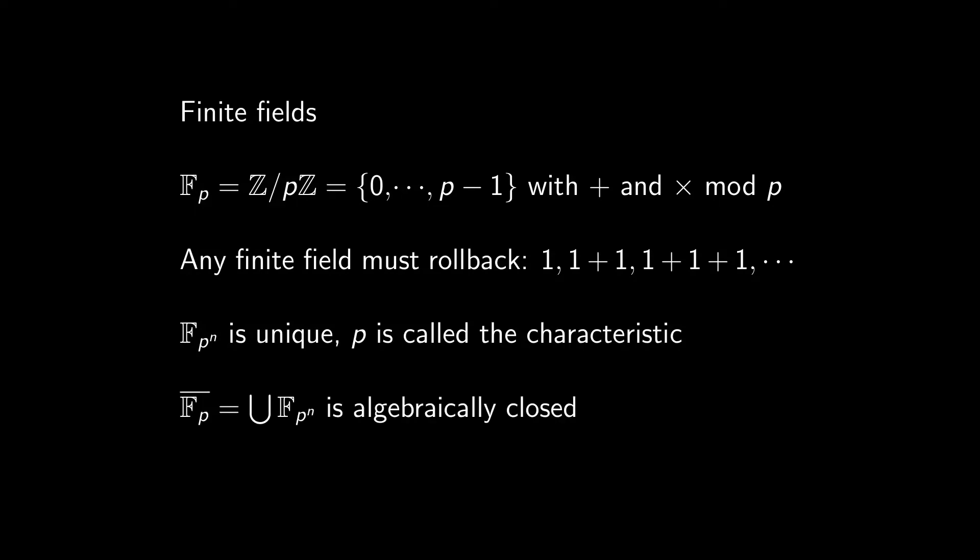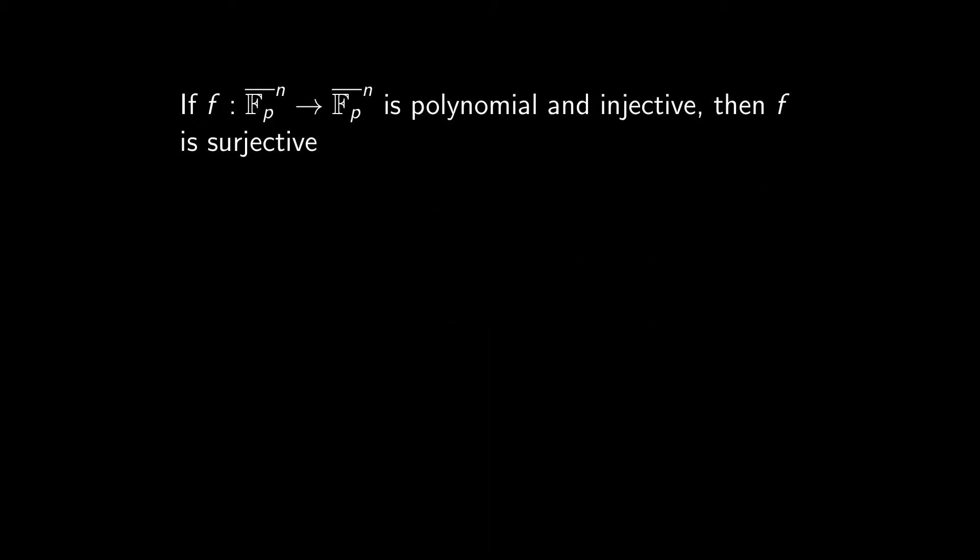Now if you take the union of all finite fields of characteristic p, you obtain an algebraically closed field of characteristic p. It means any polynomial in F_p bar has a root, and p equals zero. This field, F_p bar, has many interesting properties, but we'll focus on one of them. If a function from F_p bar to the n to itself is polynomial, meaning each coordinate is a polynomial on n variables, and also injective, then it is surjective.